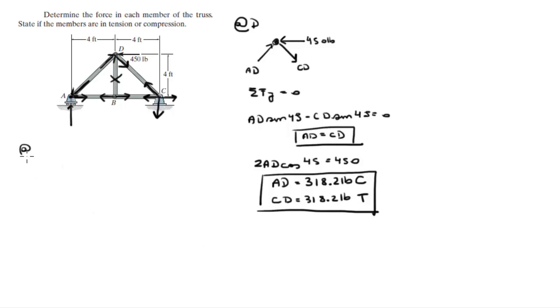Then at A we have this joint, we got a reaction going up, we got AD coming down at 318.2 pounds and we got this force AB which is equal to AD cosine of this angle. This angle is given by the tangent inverse of 4 over 4 which is 45 degrees.